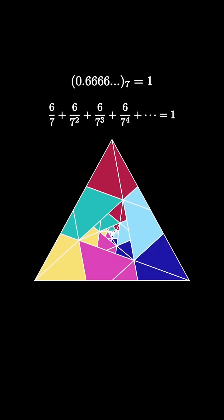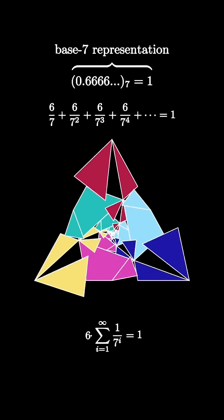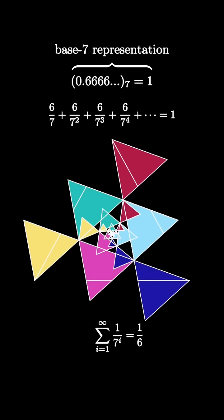One interpretation is that 0.6 repeating in base 7 is equal to 1, another one is that 6 times the infinite sum of the powers of 1 7th is 1, so that the infinite sum of the powers of 1 7th is 1 6th.